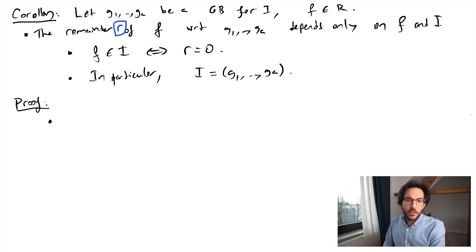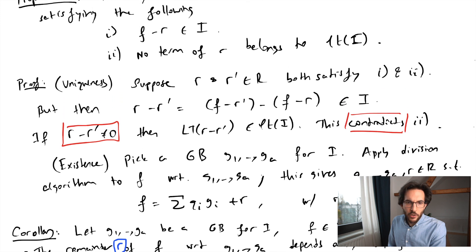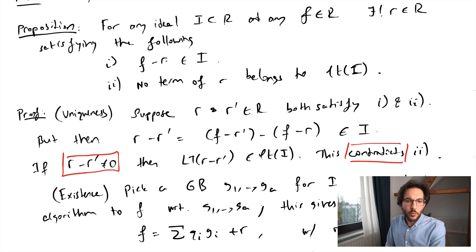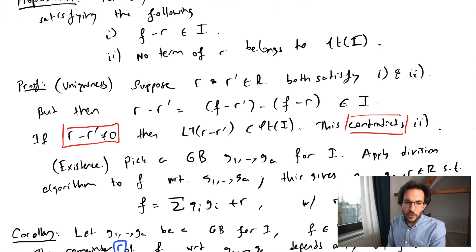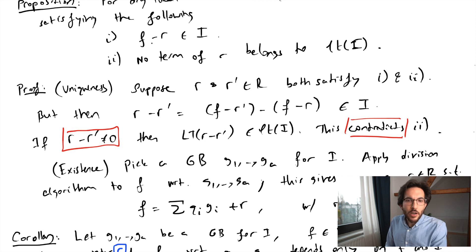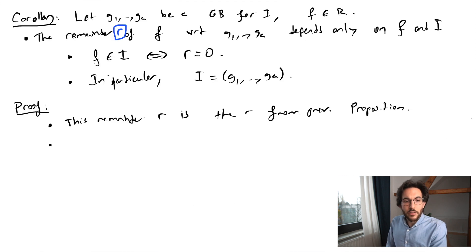So let's prove these statements one by one. So I said the remainder depends only on F and i. Well, this remainder R is the R from previous proposition. And you see that there was no mention of the Gröbner basis during the statement of this proposition. That we said that there exists a unique R satisfying these two properties. The division algorithm produces such an R, we use this during the proof, satisfying these two properties. Since this R did not depend on the Gröbner basis for its definition, it of course depends only on F and i, which was involved in this definition. And to prove this second claim, we say, so if F is in i, then this R equals zero satisfies the properties of the R inside the proposition. Therefore, this must be the remainder upon division. And the inverse is clear. So if R is zero, then F clearly is inside the ideal.